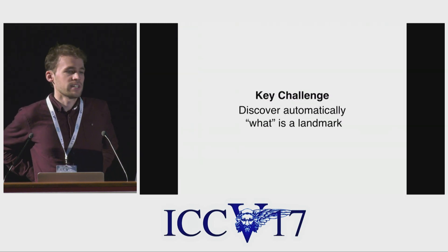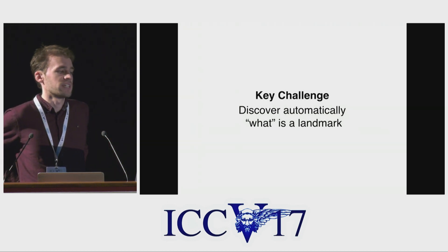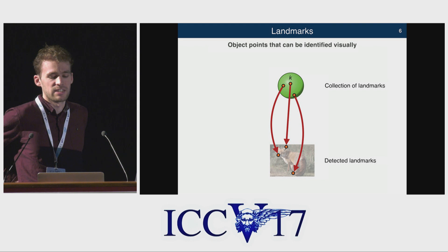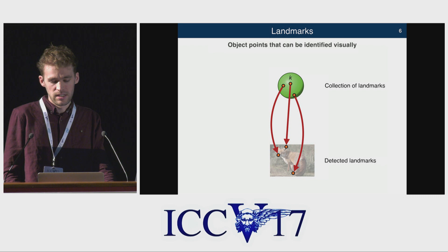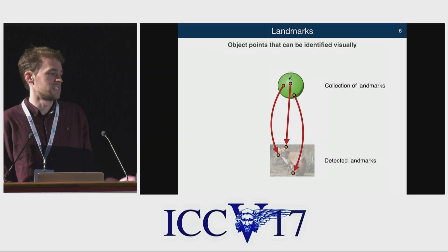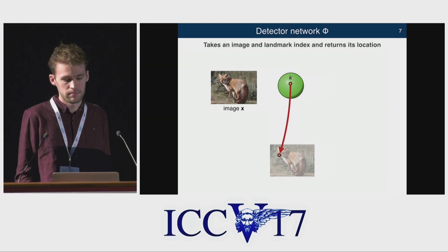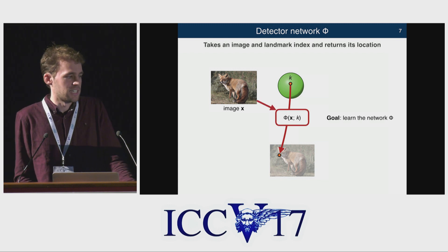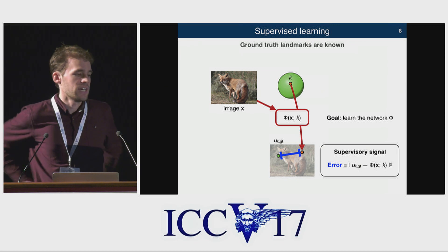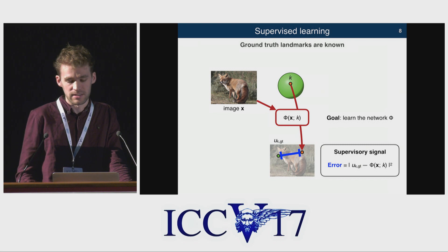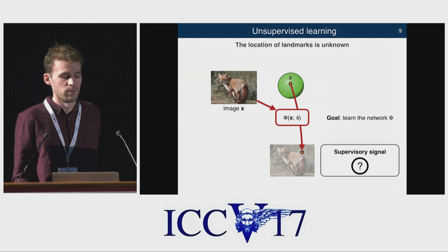We want to go directly from images to landmarks. This brings us our key challenge: automatically discovering what a landmark is without much prior information. A landmark is defined as an object point that we can identify visually in most of the images in our set. We say in advance that we want k different landmarks and need to find relevant ones — like the nose, ears, and tail on a fox — and say where they are in the image. Like most approaches nowadays, we're going to do this using a CNN. If we had supervisory signal in the way of human annotations, this would be easy — we'd just penalize the distance between what the human picked and what the network says. But without that, we don't know how to say what a good or bad landmark is.